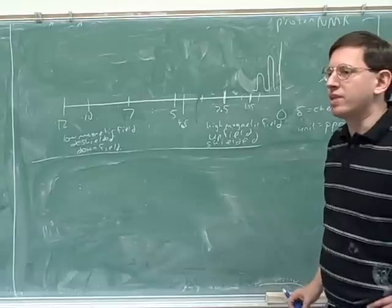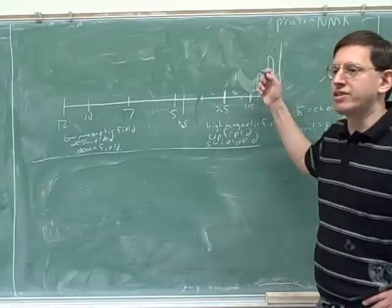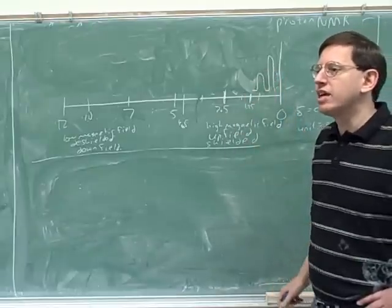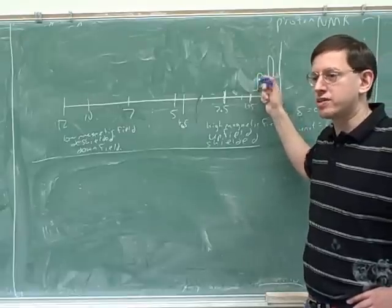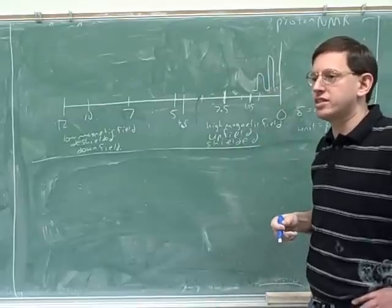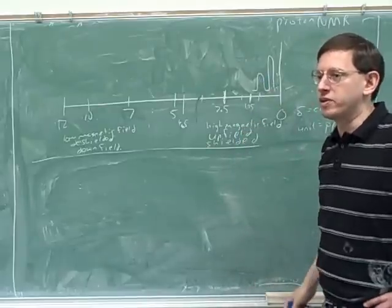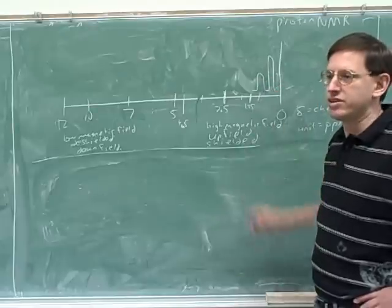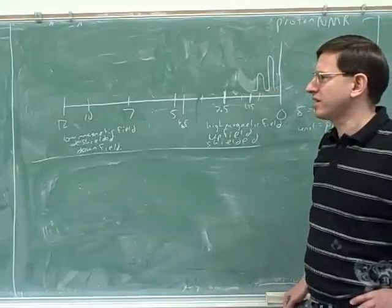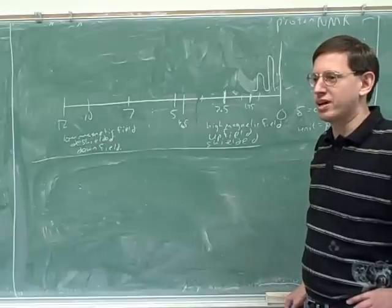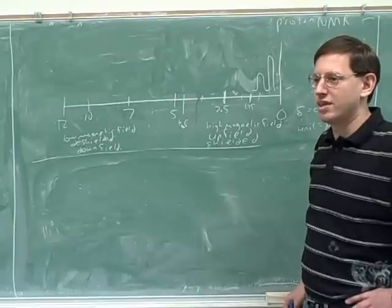Now I've been saying that the height tells you the number of hydrogens. Actually, that was a little loose. It's actually the area under the peak that tells you the number of hydrogens. That's why this is called integration. Do you remember from calculus that the integral tells you the area under a curve? So if you're integrating, you're just figuring out the area under the peak.